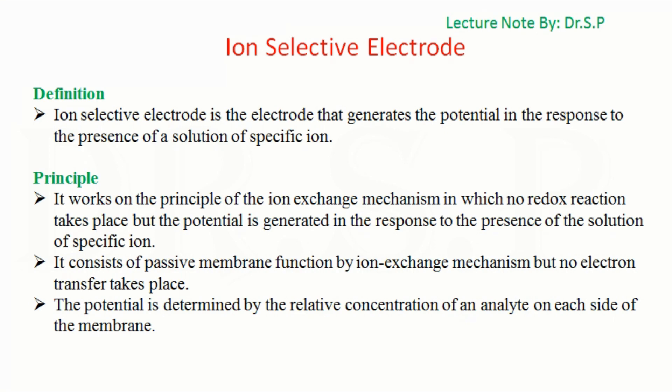Ion Selective Electrode. Definition: Ion Selective Electrode is the electrode that generates the potential in response to the presence of a solution of specific ion.